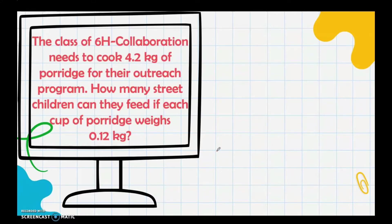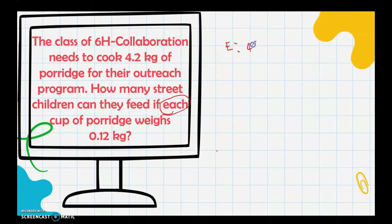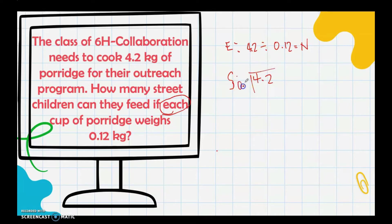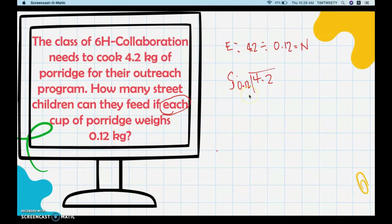The class of 6H needs to cook 4.2 kilograms of porridge for their outreach program. How many street children can they feed if each cup of porridge weighs 0.12 kilograms? This is a division problem. The equation is: 4.2 ÷ 0.12 = n.